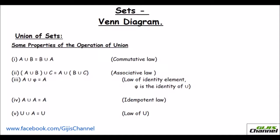The first property is the commutative property. It says A union B is equal to B union A. Whether you do A union B or B union A, the result is going to be the same. That is the commutative law, which deals with only two sets.